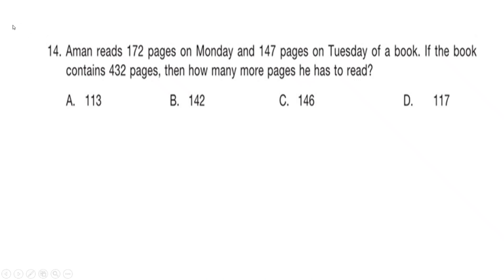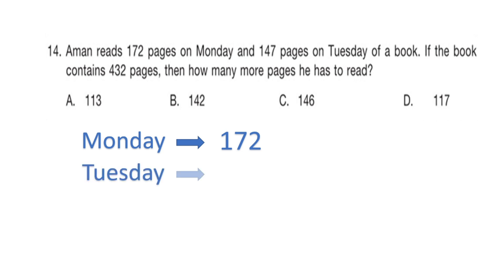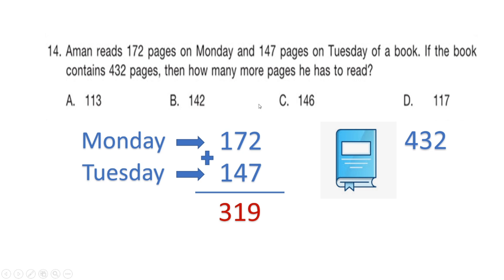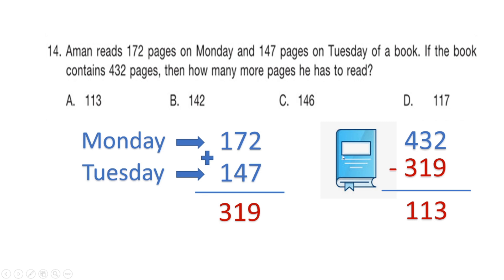On Monday he reads 172 pages and on Tuesday he reads 147 pages. The total number of pages he has read is 172+147=319. The book contains 432 pages, so the pages remaining are 432−319=113. The right answer is option A: 113.